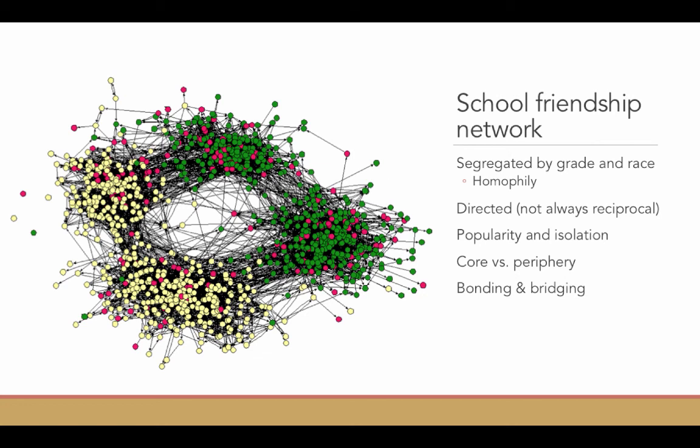The other thing that social networks can show us is how ties can bond people who are similar to one another. That's when you would see relationships between people of a similar race or grade. And we can see ties that bridge people who are of different social groups together. Bonding ties bring people together who are of similar characteristics. Bridging ties bring people together who have different characteristics.